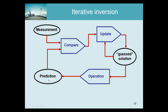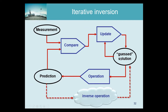Based on the forward operator, we can predict what we should have measured if our initial solution were correct. We compare that prediction with the actual measurement, and of course in the first iteration they will be very different. Then comes the trick: we update the solution. The update doesn't have to be perfect — it only has to be better than the previous solution. We repeat this procedure until the prediction matches the measurement, which corresponds to applying the inverse operation.